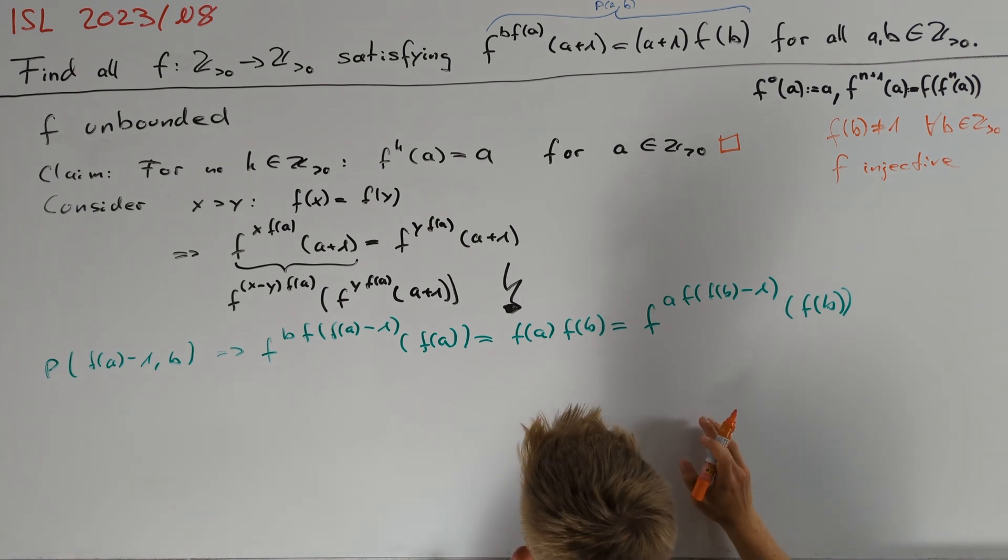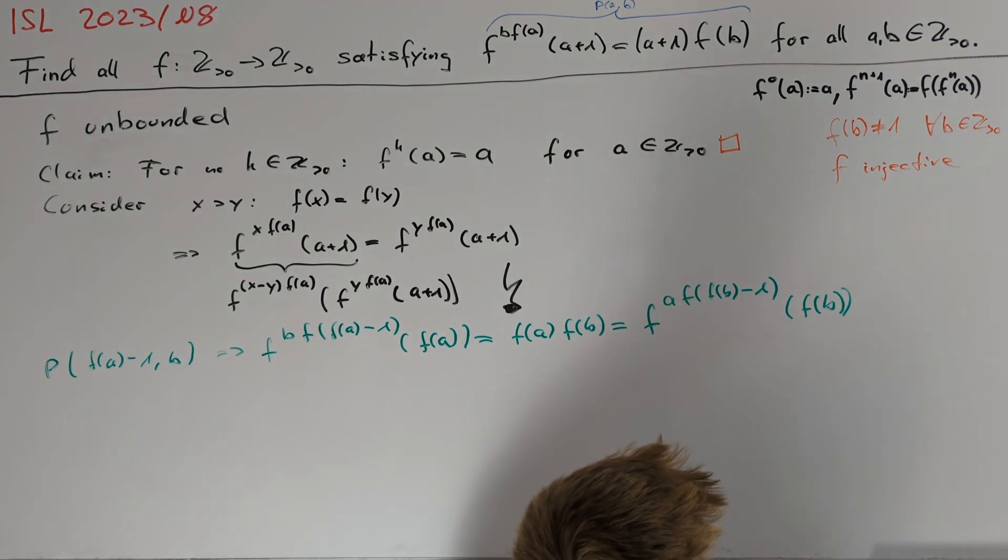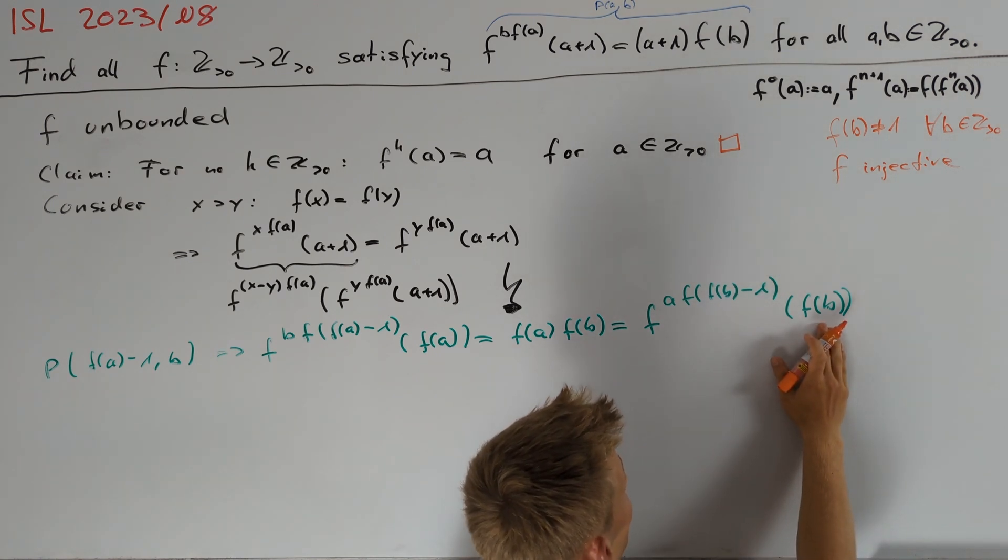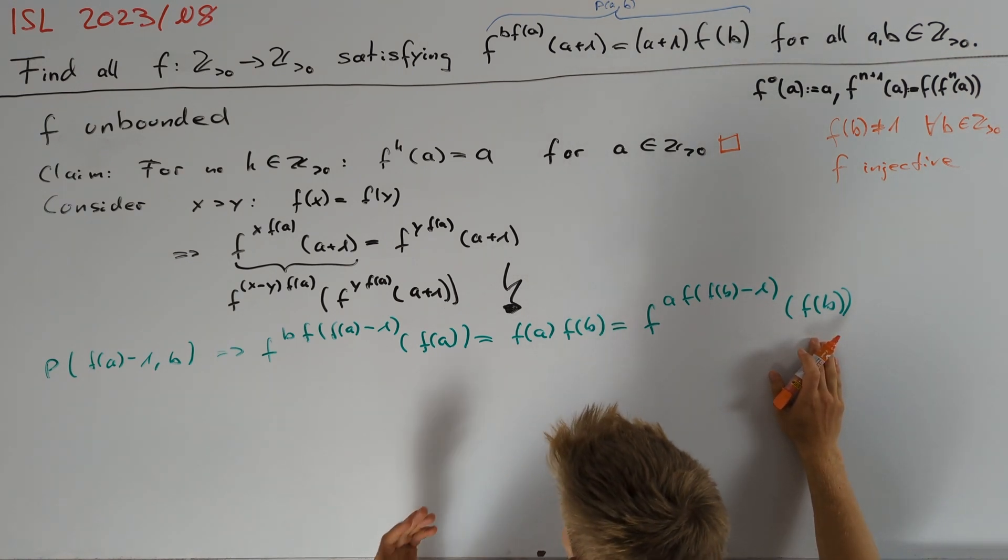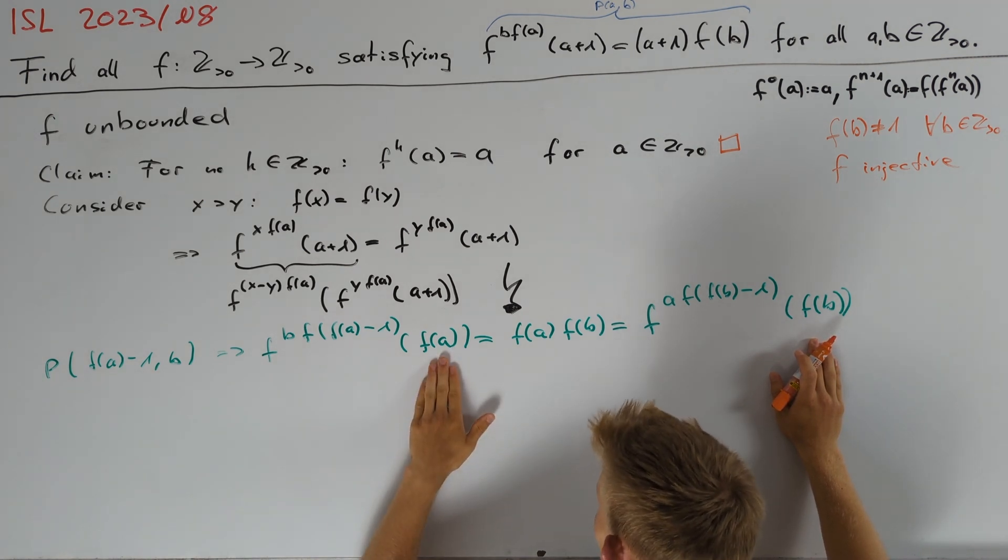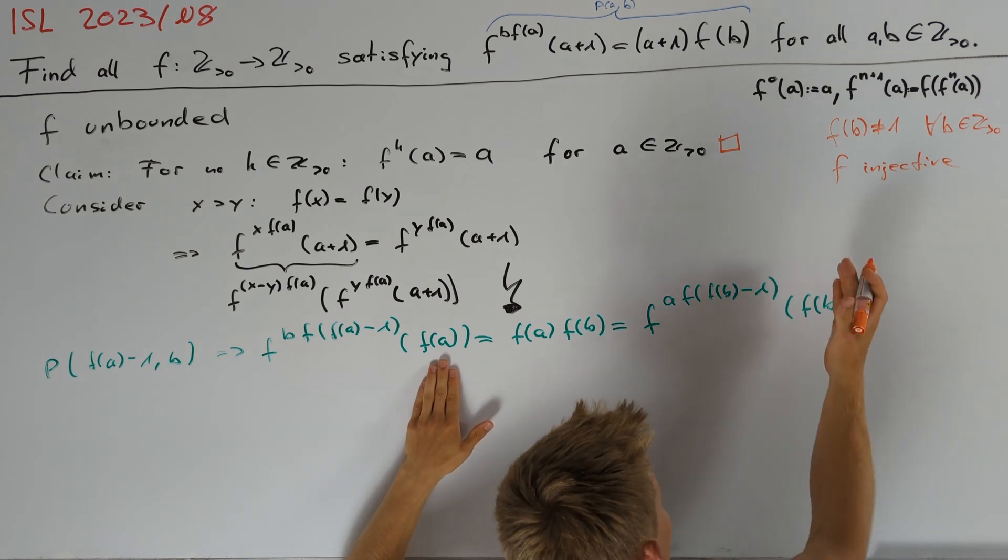Therefore, f attains at least one of the values a or b. Since we already know that f never attains the value 1, we can just take b equals to 1 and then we directly get that the function f will attain the value a. In other words, we know that f attains every value greater than 1. So, let's write this down.